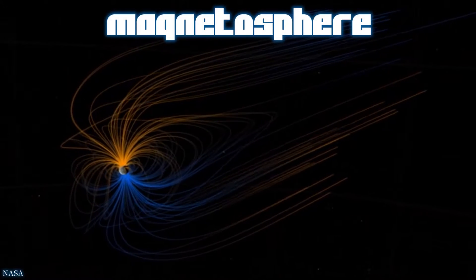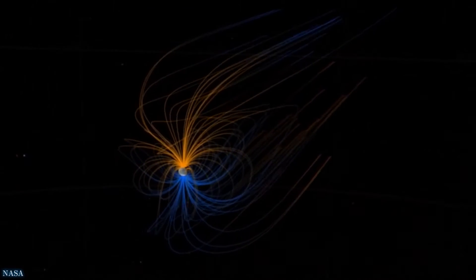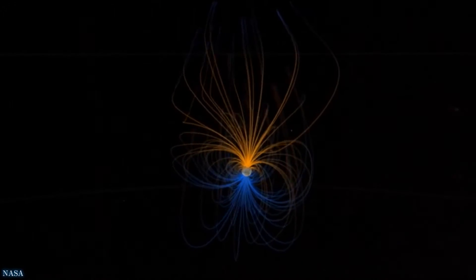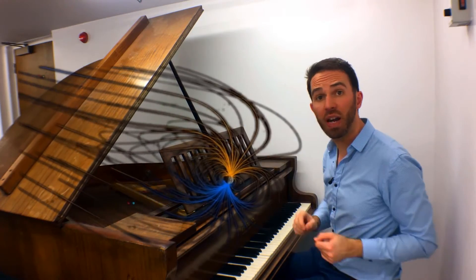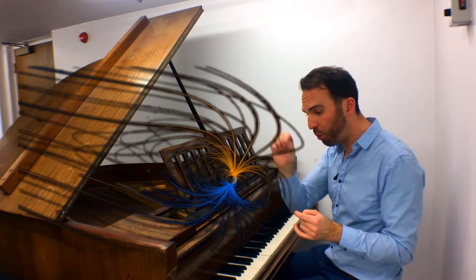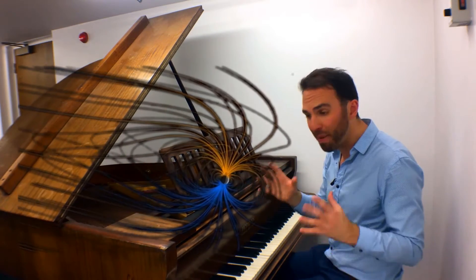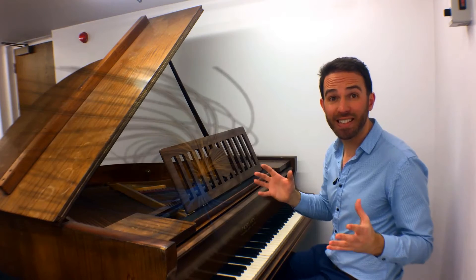Earth's magnetosphere is the region of space around the Earth that is dominated by Earth's magnetic field. The shape of Earth's magnetosphere and the speeds the waves can travel at, at every point within it, massively affect these sounds.